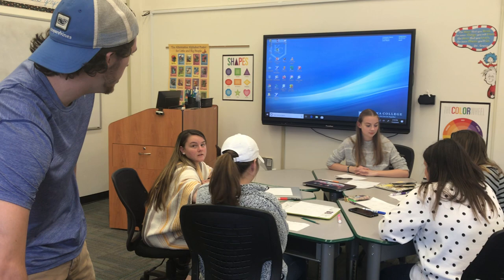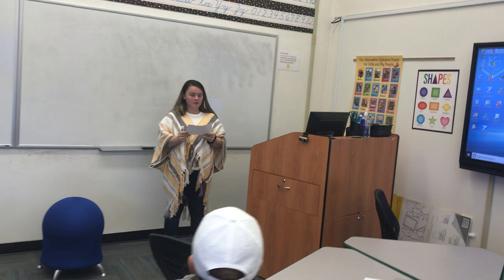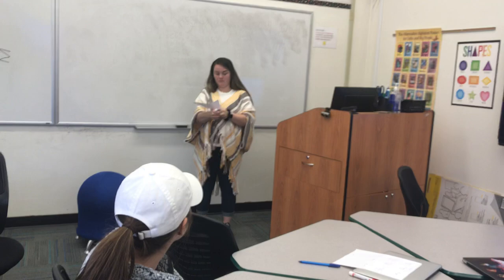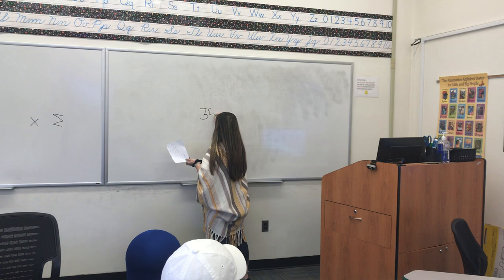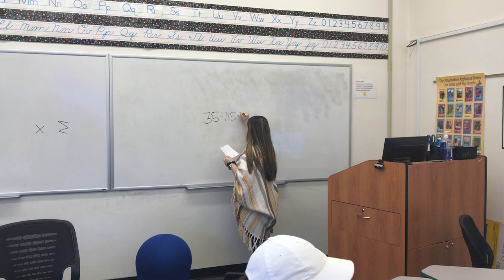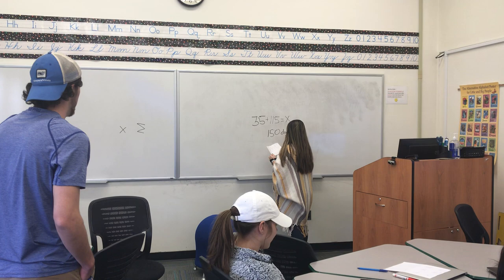Mine says: Jamie has 35 dogs and Casey brings 115 dogs to Jamie's house. How many dogs are now at Jamie's house? So, because Jamie already had 35 dogs, that's there, and then Casey brought 115 — which seems like a lot — and then we want to know how many they have in total. So we're just going to add, and the total is 150 dogs.